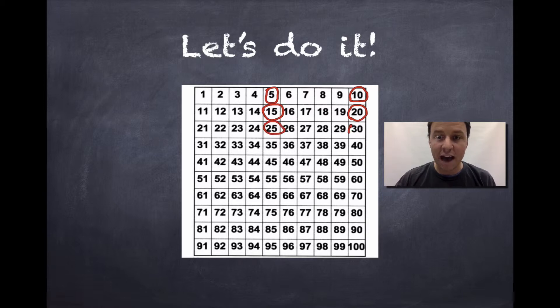After 20 comes 25, then 30, then 35, then 40, then 45. What comes after that? 50. Say it with me. Next number 55, 60. We're going to stop there.